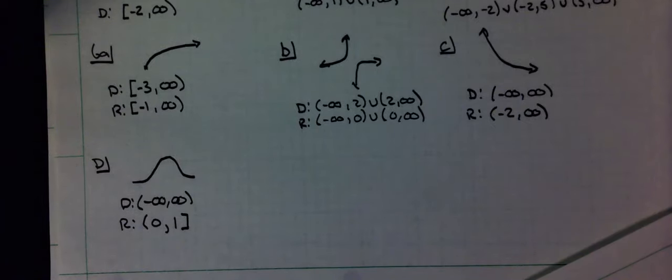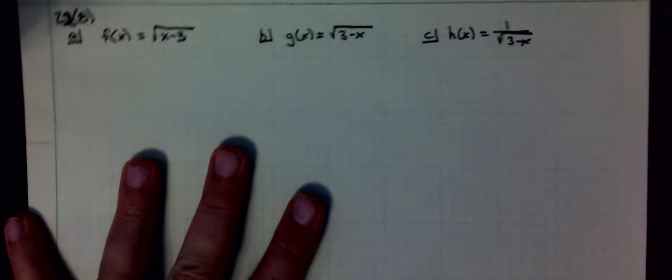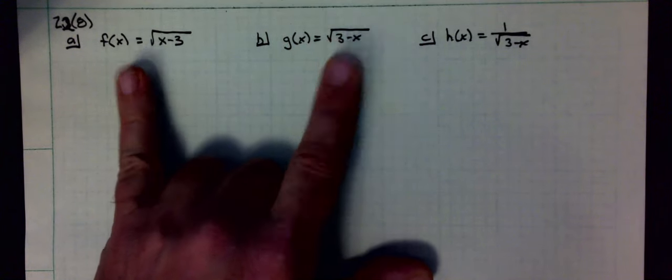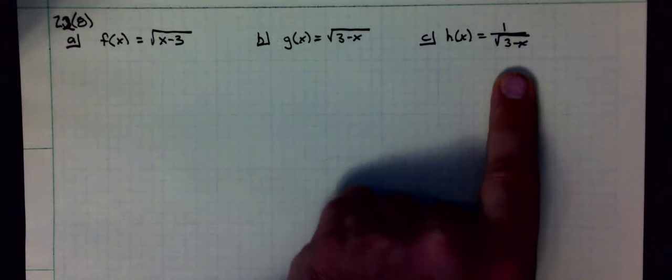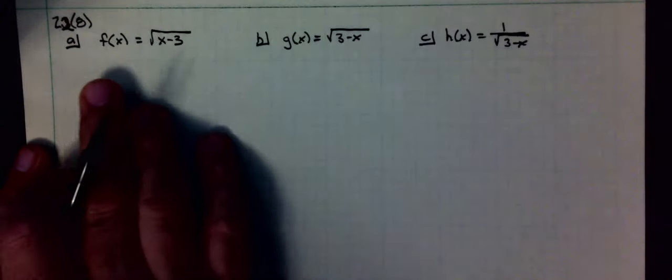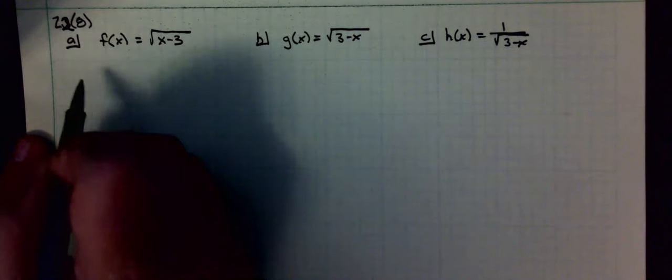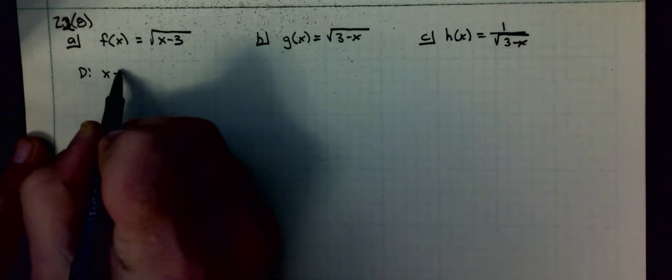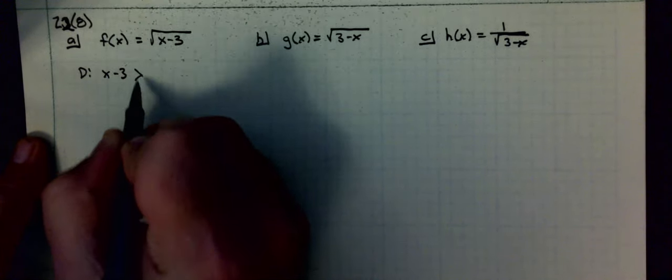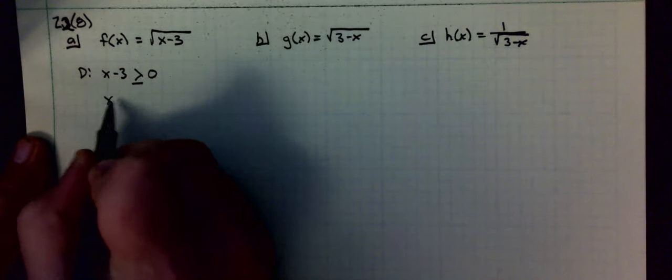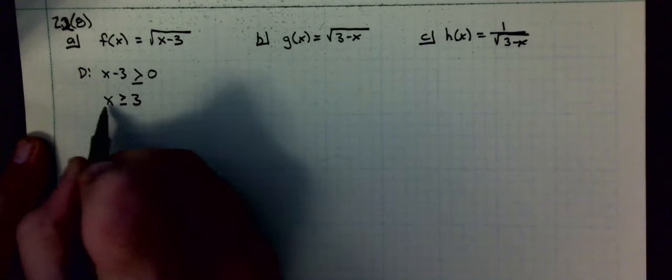Next is 2.2 number 8. It walks you through a key thing here. First, it wants to know the domain in both set builder and interval notation of the first two functions. Then it gives us this third function. The domain, x minus three has to be greater than or equal to zero. Solving this, x has to be greater than or equal to three. That's my inequality notation. In interval notation, three to infinity.